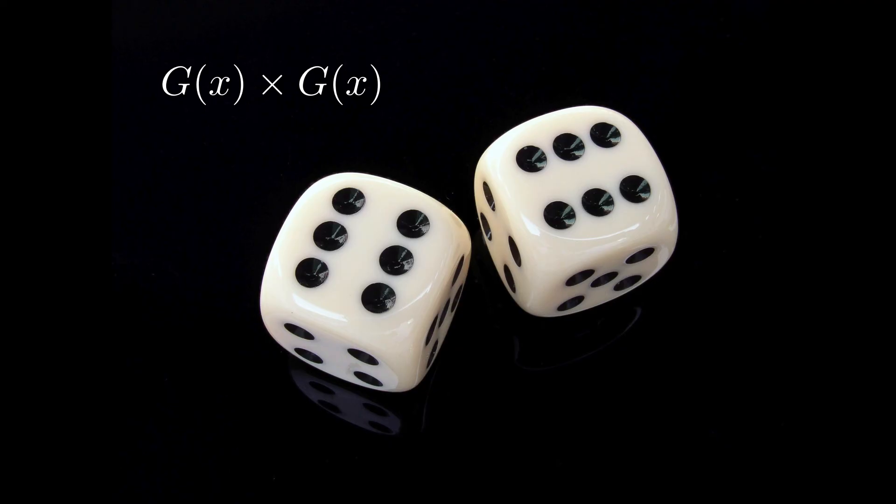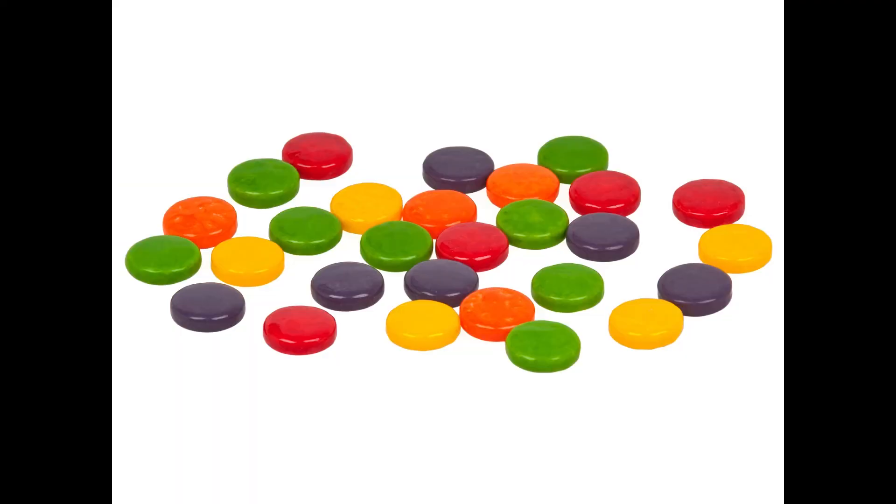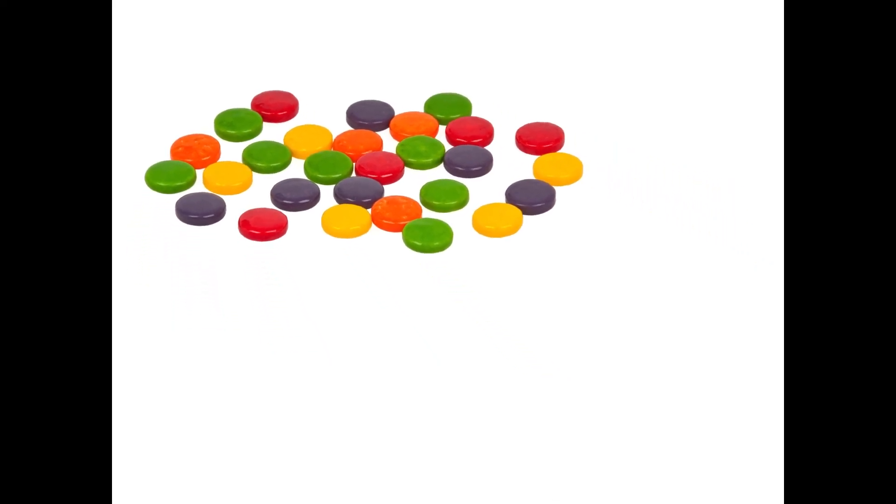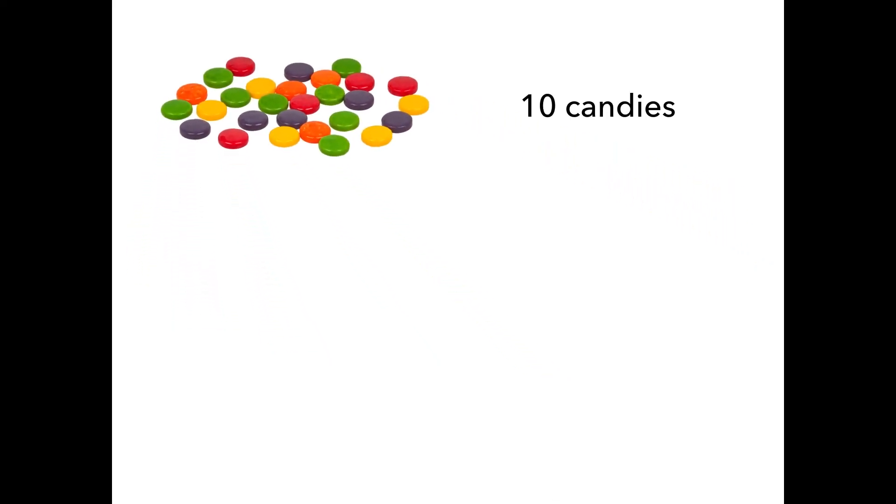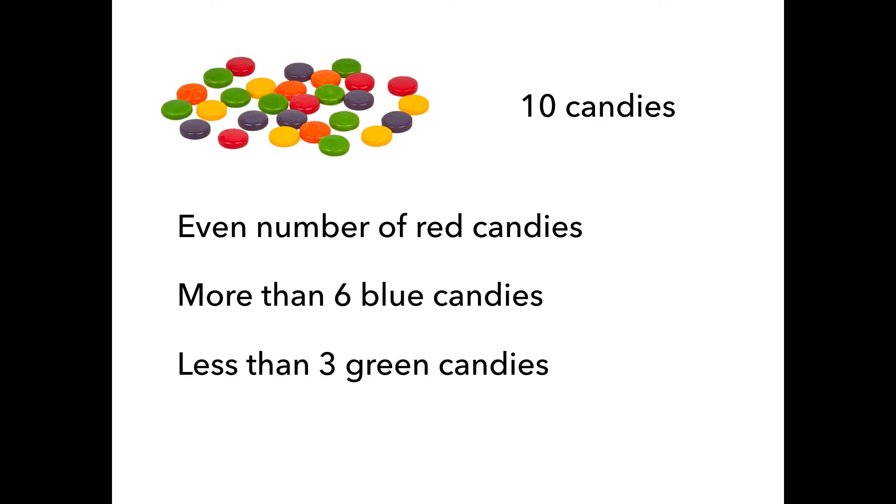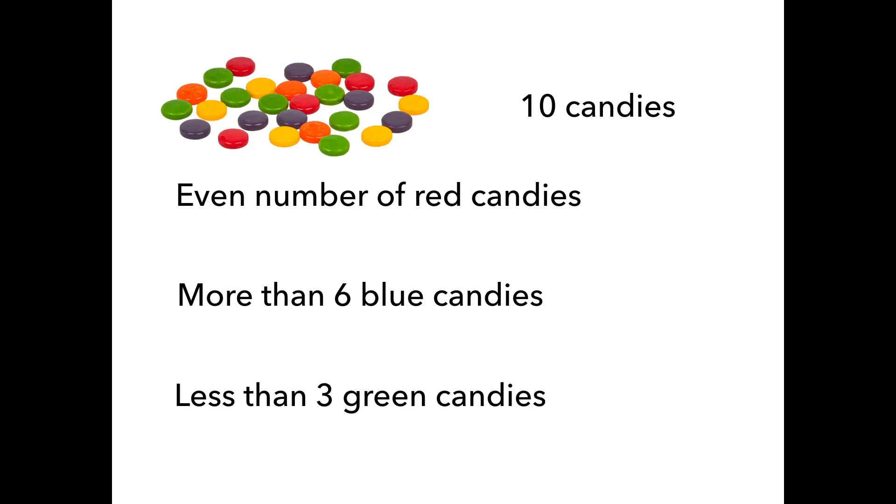So I'll just show you a simple counting example. Say you want to buy 10 candies, and there are red, blue, and green candies. Somehow, you want to have even number of red candies, more than 6 blue candies, and less than 3 green candies. How many ways are there to combine these colored candies? You may want to just carefully count all the cases, but with generating functions, this can be done quite systematically.